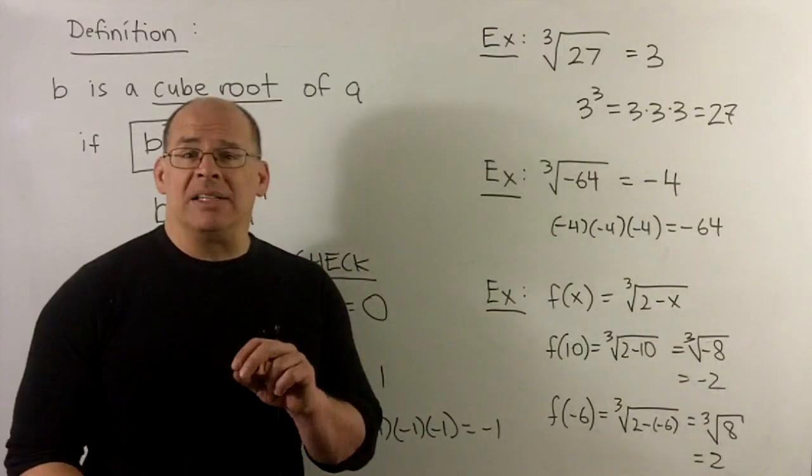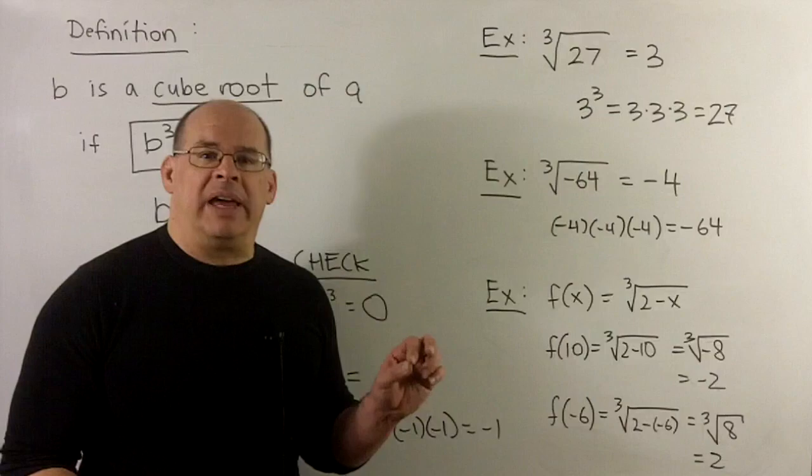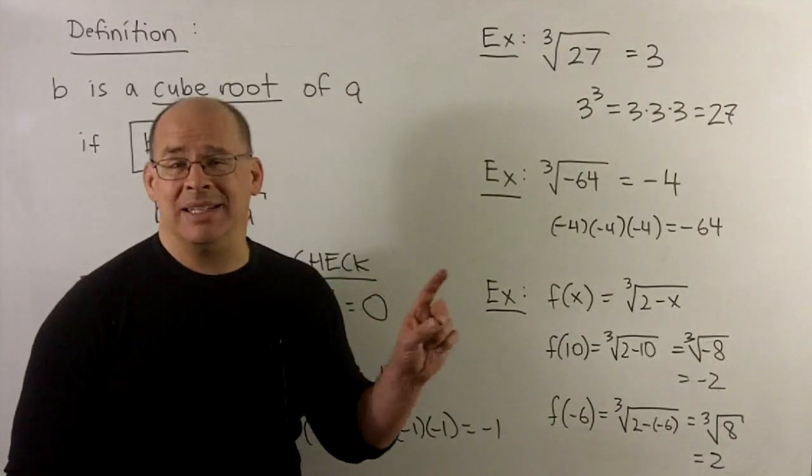Here we'll have 2 minus and minus 6. The minus minus becomes a plus, getting us an 8. And then the cube root of 8 is 2. 2 times 2 times 2 is 8.